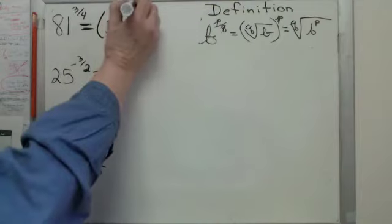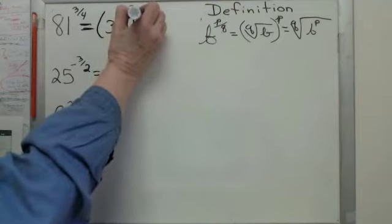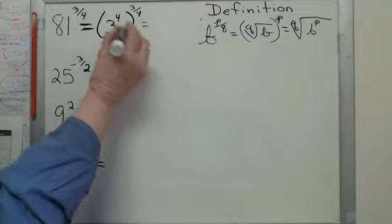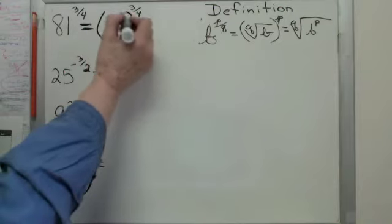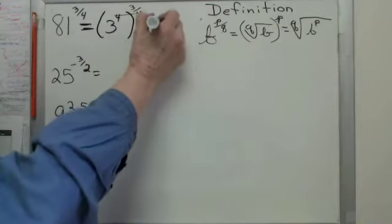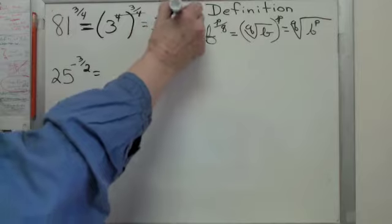So 3 to the 4th to the 3/4ths. Now use your exponent rules. Power to a power, multiply. 4 times 3 over 4, 4ths cancel. 3 to the 3rd, 27.